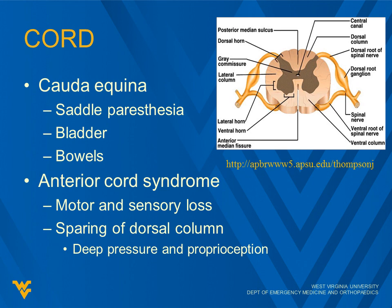As for anterior cord syndrome, which you do see a fair amount with some of our fracture issues, you have motor and sensory loss because those are the anterior segments. But you get sparing of the dorsal column, which is deep pressure and proprioception. So it's an odd little pairing there.